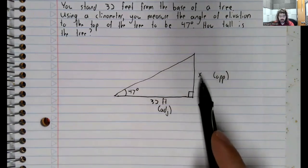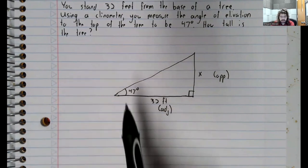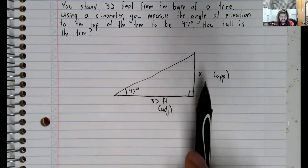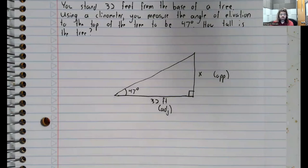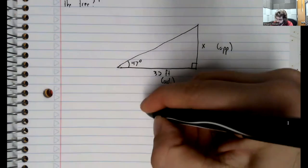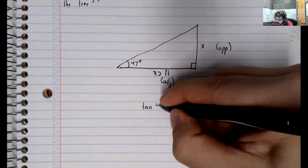this x is the opposite side. We should look for a trigonometric function that relates the angle, the adjacent side, and the opposite side. And there are two of them, but traditionally we use the sine, cosine, and tangent when we're doing this sort of right triangle trigonometry. So let's use the tangent.